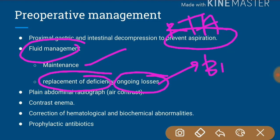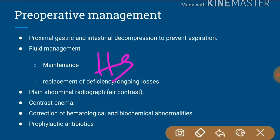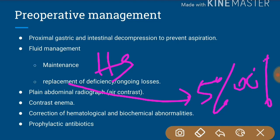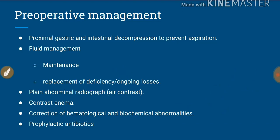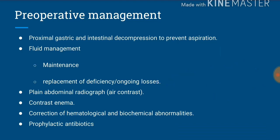Ongoing losses include the biliary aspirate. Maintenance fluid is calculated by the Holliday-Segar formula. Replacement is by finding the percentage of dehydration — 5%, 10%, or 15% — and correcting accordingly. As for ongoing losses, if the aspirate is bilious and more than 30 ml per day, we replace it with Ringer's lactate. If the aspirate is non-bilious, we replace it with half-normal saline, i.e., 0.45% normal saline.